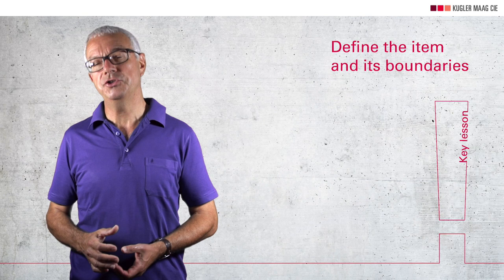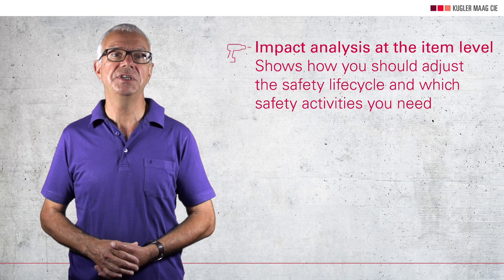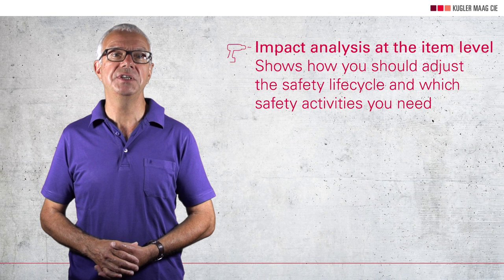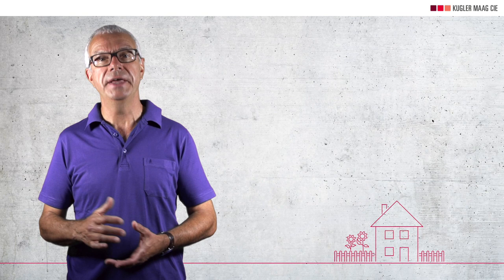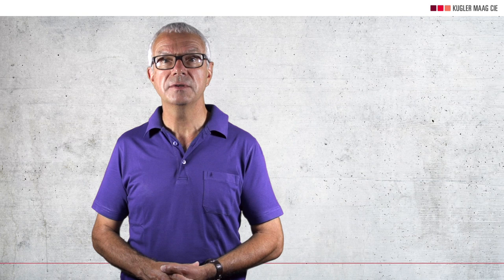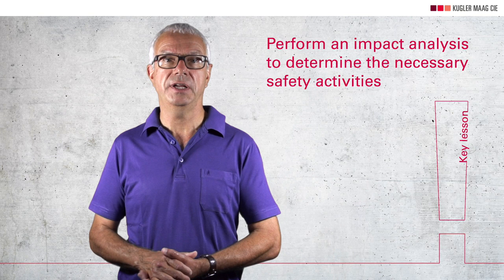Let's continue with the impact analysis — our second topic. An impact analysis shows how the life cycle should be adjusted and tailored, and which safety activities are necessary. It must be known whether the item is a new development, a modification, or just the use of a previously developed item in a modified environment — for example, an airbag in a new vehicle variant. In the safety life cycle, this primarily refers to the carmaker and the vehicle level, but all suppliers should carry out an impact analysis for their area of responsibility. Key lesson number two: in order to determine the necessary safety activities, an impact analysis must first be made.